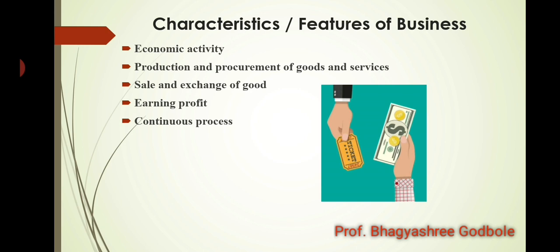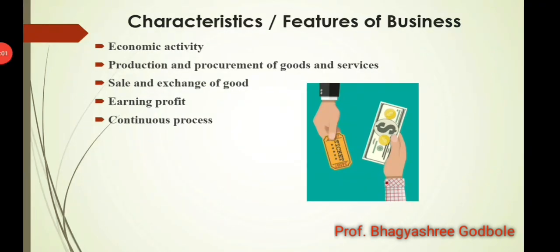The next characteristic is that business should be a continuous process. As already discussed, a one-time act of purchasing and selling goods cannot be considered a business — it has to be continuous and on a regular basis. For example, if I own a property and sell it just once, that act is not a business. But if I am an estate agent who deals in properties on a regular basis, that is a business, because an estate agent is continuously buying and selling properties.